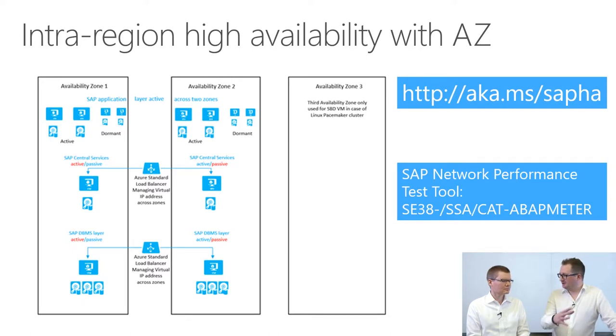For consultants and basis people in the audience, there is a report built into most SAP systems. In SE38, you can run SSA cat and run ABAP meter. The columns to check are DB access and DBE access — that will tell you your latency between your app server and your DB server. Obviously, the less latency, the better.